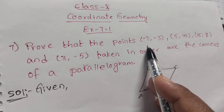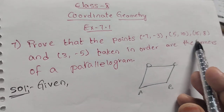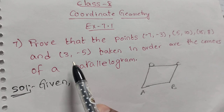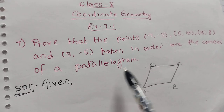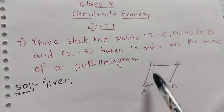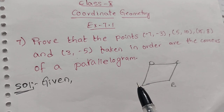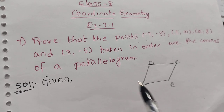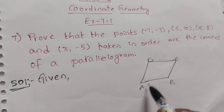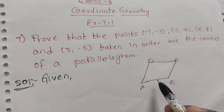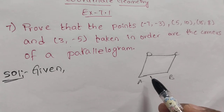We need to prove that the points taken in order form the corners of a parallelogram. Four points form a parallelogram when opposite sides are equal — this is the property of a parallelogram.